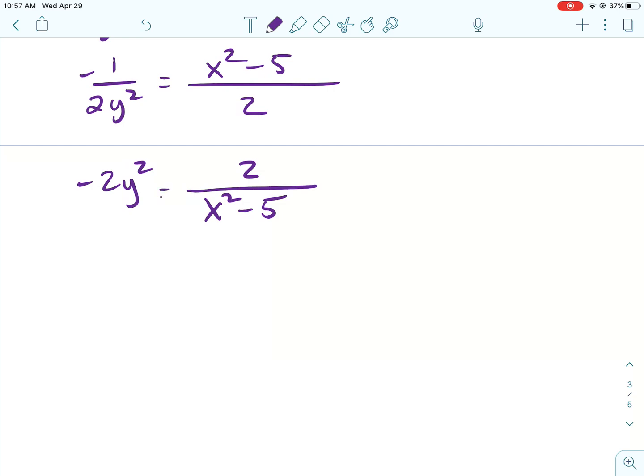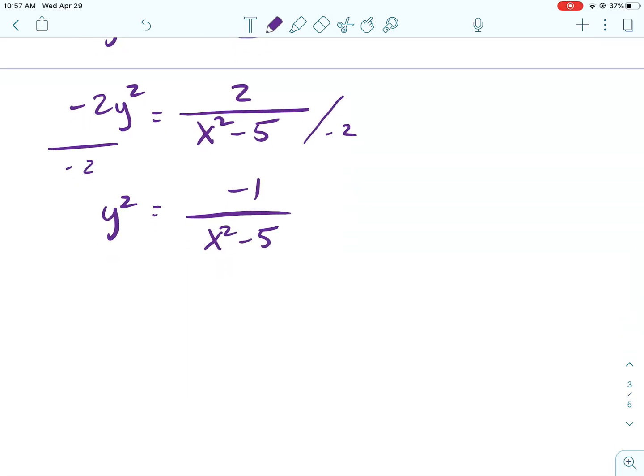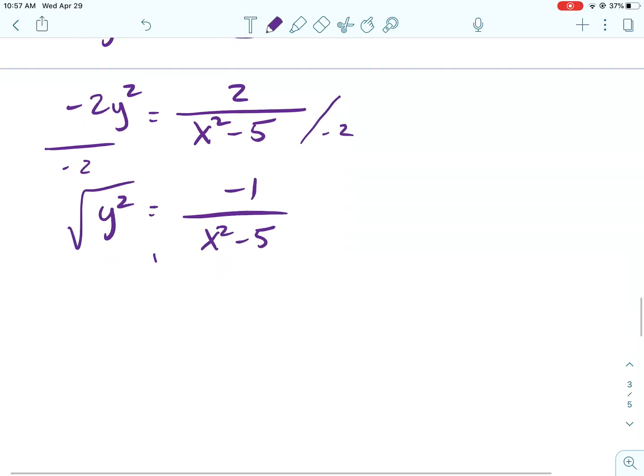And then, I can multiply by the negative 2. What am I doing? Sorry, I can divide by the negative 2. So, y squared, that's going to be negative 1 over x squared minus 5.